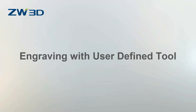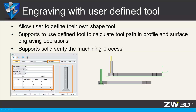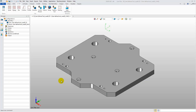Engraving with user-defined tools. In ZW3D 2017, users can define tools of any shape by themselves in the Tool Manager. User-defined tools can be used for calculating toolpaths in profile and surface engraving operations. We can use Solid Verify to simulate the actual machining process. Let's take two cases to show the effect of these new functions.